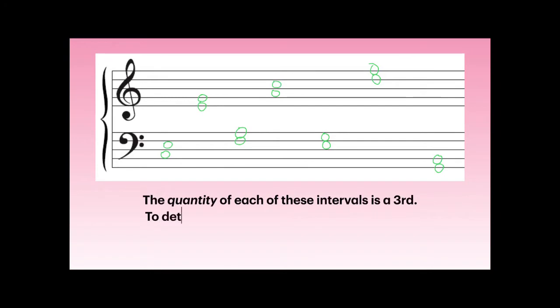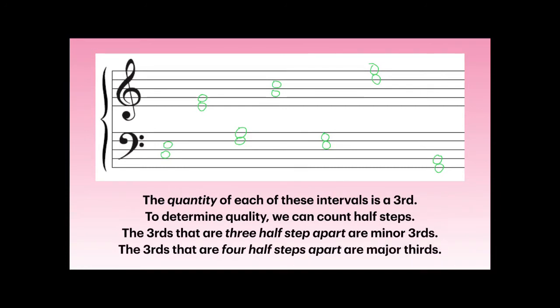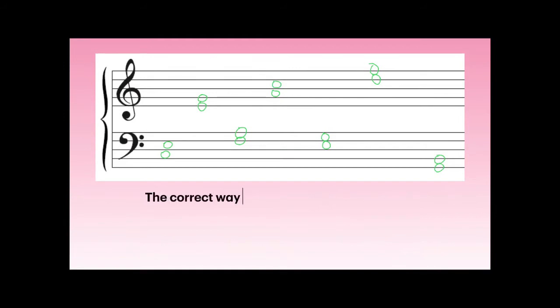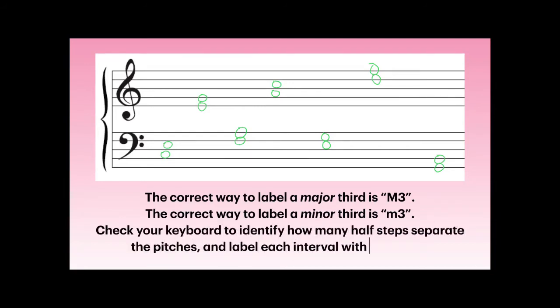The quantity of each of these intervals is a third. To determine quality, we can count half-steps. The thirds that are three half-steps apart are minor thirds. The thirds that are four half-steps apart are major thirds. The correct way to label a major third is capital M3; the correct way to label a minor third is lowercase m3.